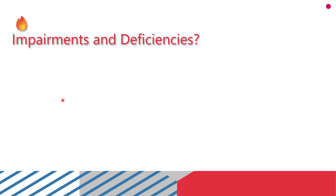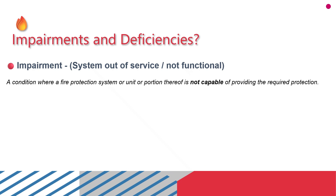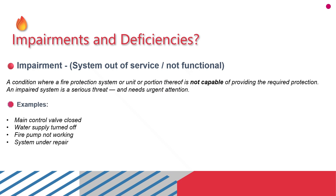Let us understand one of the most critical parts of NFPA 25: impairments and deficiencies. An impairment is a condition where a fire protection system, or a unit or portion of it, is not capable of providing the required fire protection. An impaired system is a serious threat and needs urgent attention. Examples include: the main control valve is closed — which obviously affects functionality since all control valves shall be normally in the open position — or the water supply is turned off.